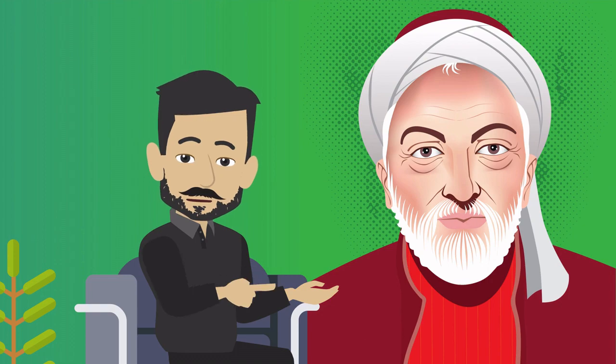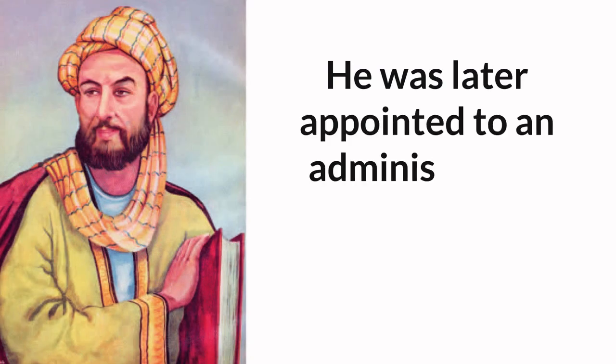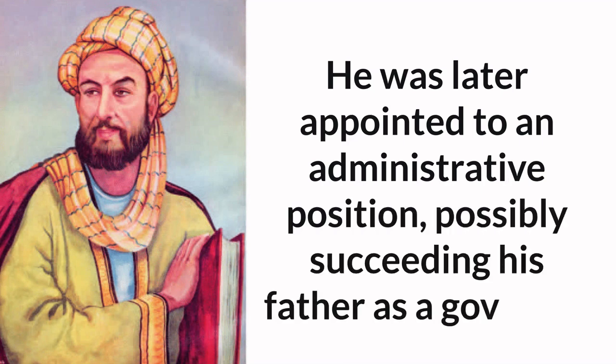By 18, he was well-educated in Greek sciences. His father died when Avicenna was 21 years old. He was later appointed to an administrative position, possibly succeeding his father as a governor.